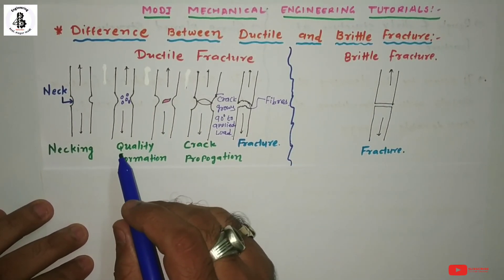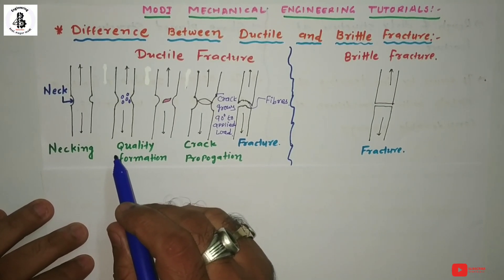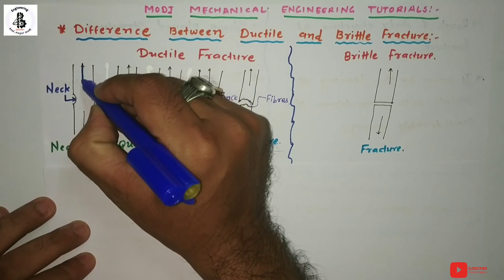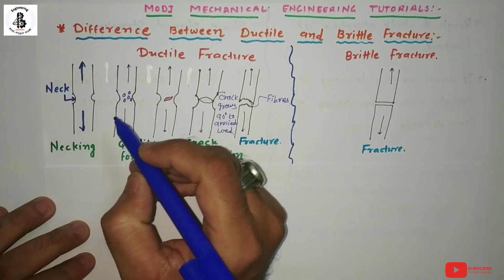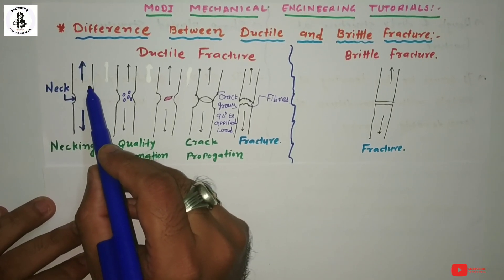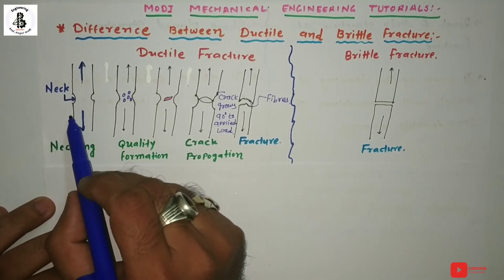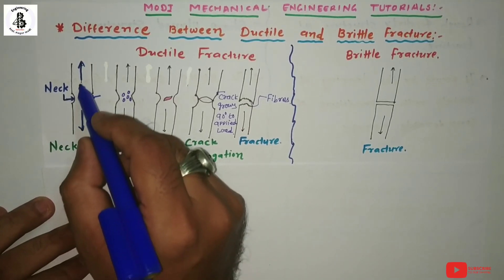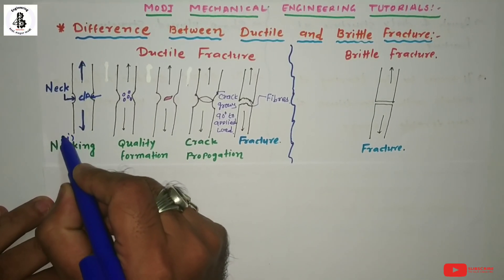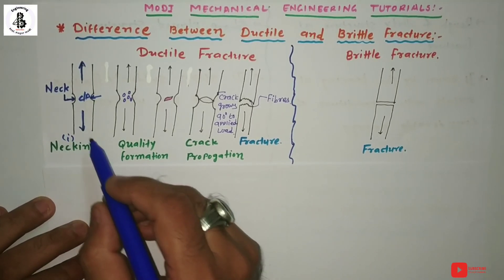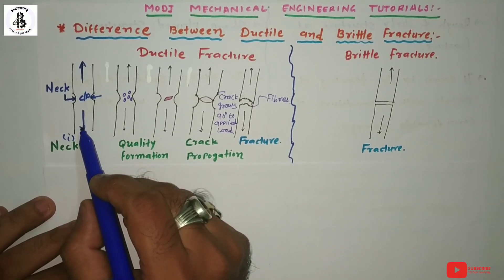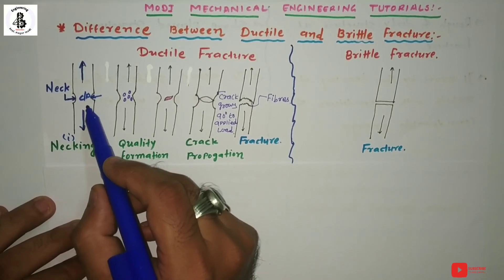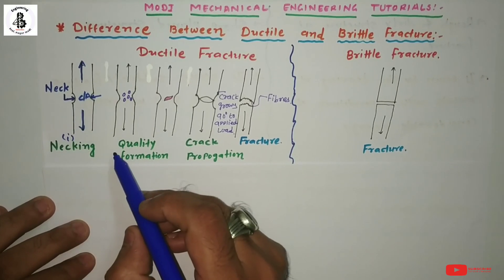Starting with ductile fracture: the first step takes place by the application of tensile load. The metallic materials form necking — necking means it reduces the cross-sectional area under the application of tensile load. The first step, necking, takes place at the middle section of the material where it has the same cross-sectional area, or at any narrow area within the material.